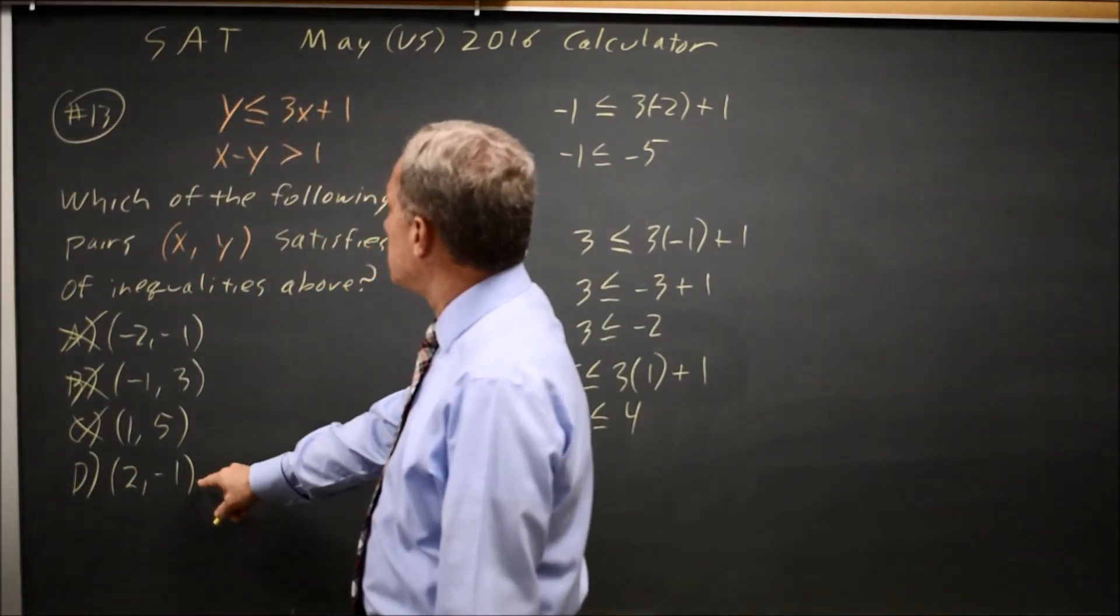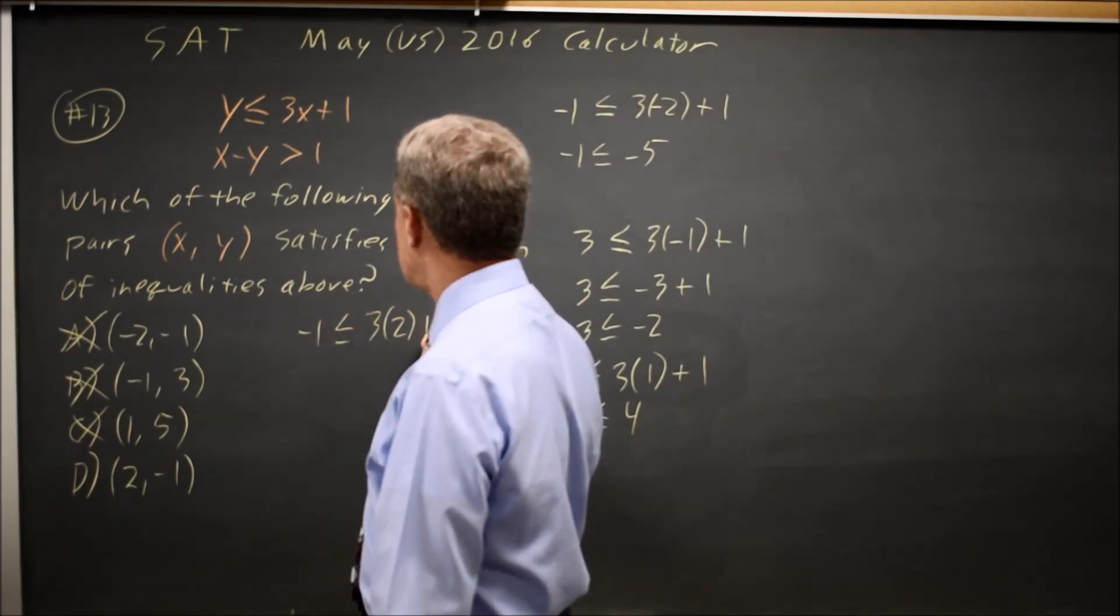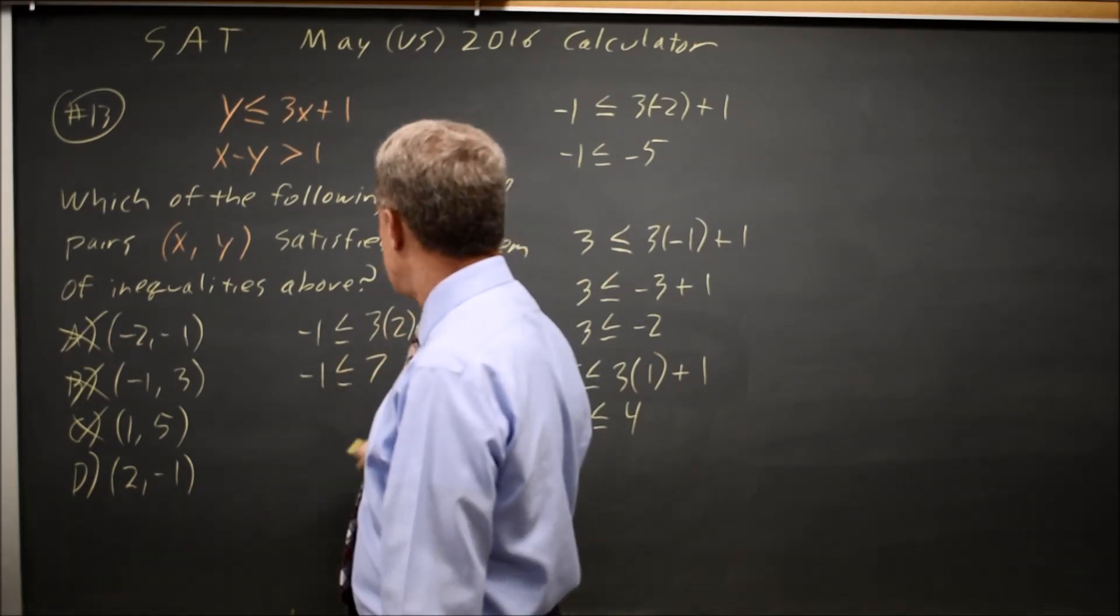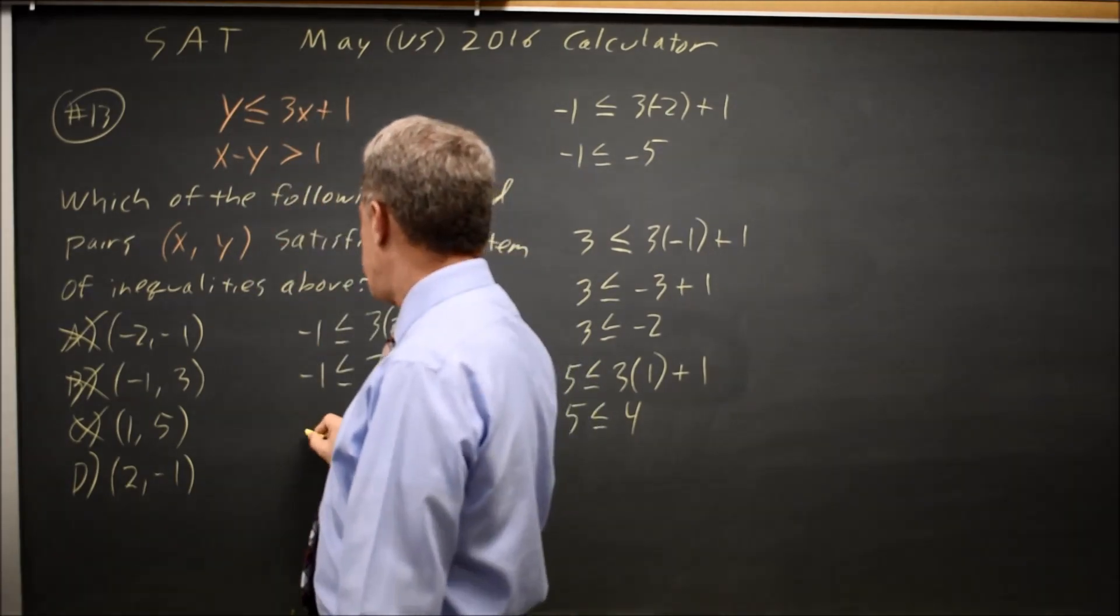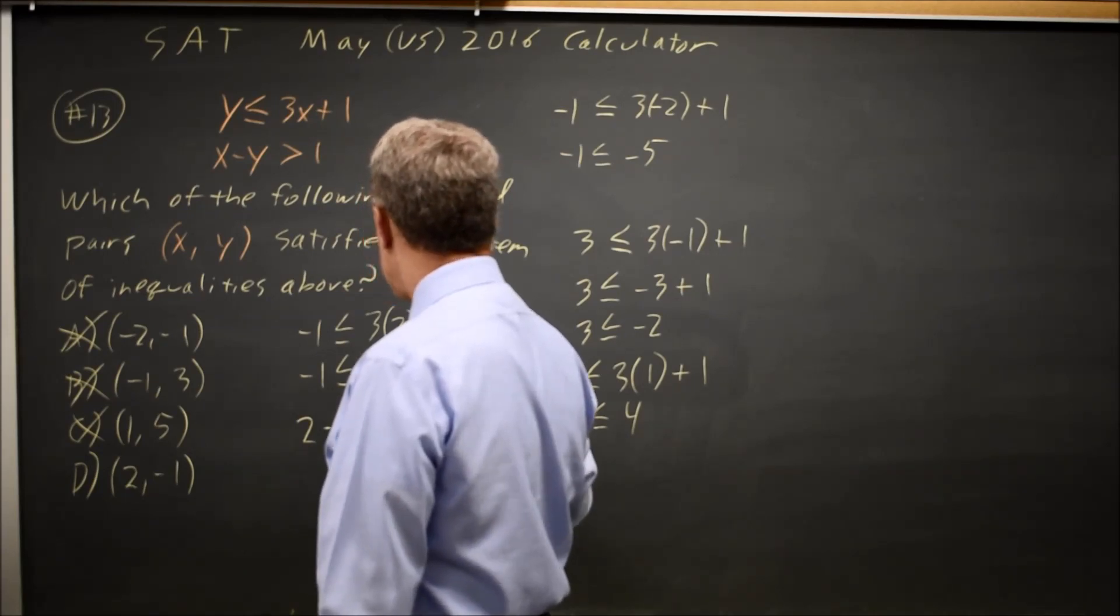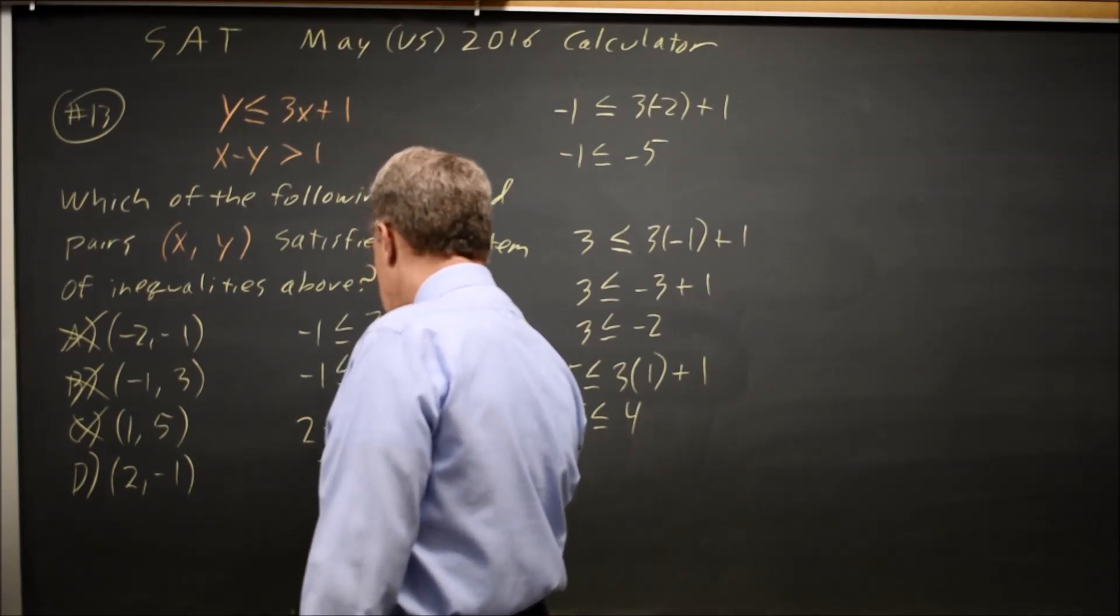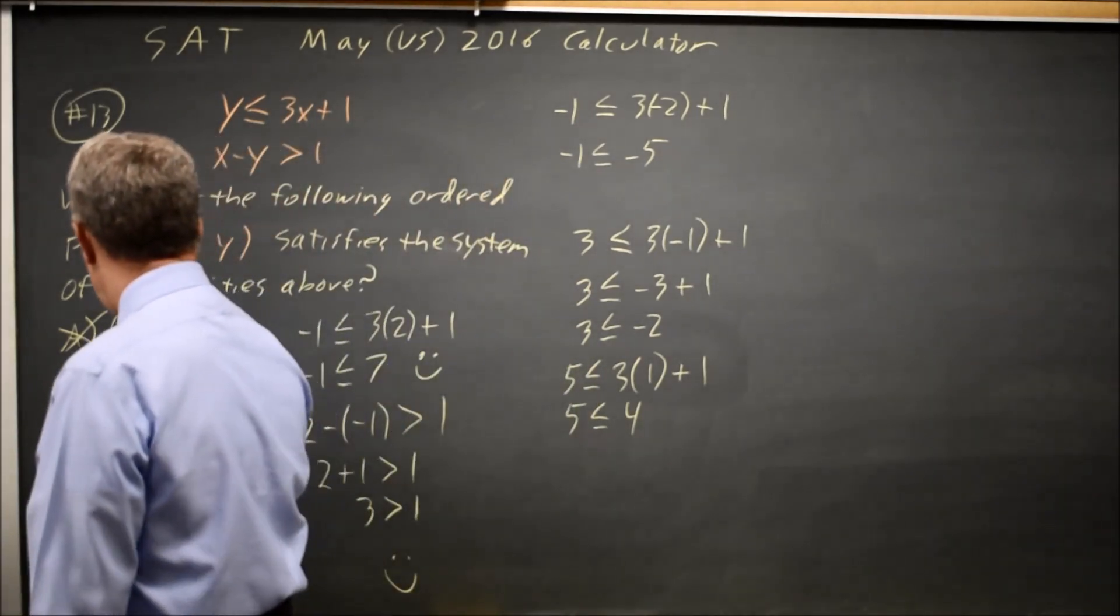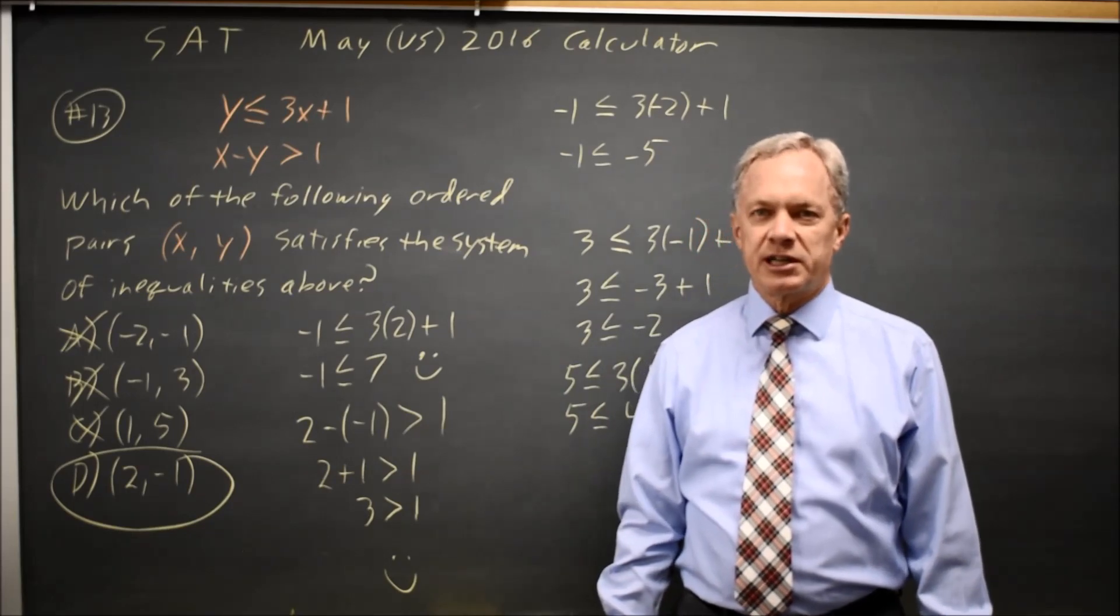So choice D, is the Y value negative 1 less than or equal to 3 times the X value 2 plus 1, negative 1 less than or equal to 3 times 2 is 6 plus 1 is 7. That one's true. What about the second inequality? The X value is 2, X minus your Y value negative 1 is supposed to be greater than 1. That's 2 minus negative 1 is plus 1, greater than 1. 3 is greater than 1, so that one is also true. Since both inequalities are satisfied by XY equals 2 negative 1, choice D would be our correct answer.